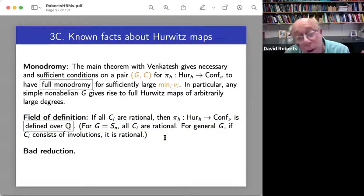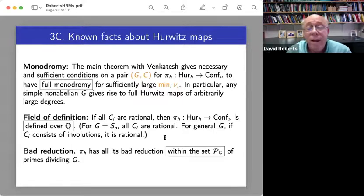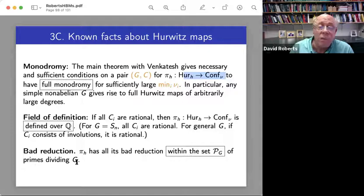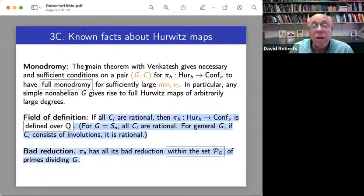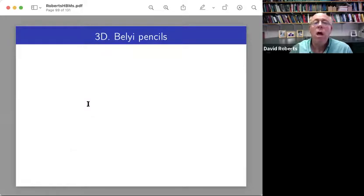Field of definition. This is the most abstract nonsense of these. So if all the CIs are rational, then this cover is defined over Q. There's sort of no irrational data involved anywhere. And for those of you who haven't seen this, if you're thinking in the group Sn, then all the classes are rational.